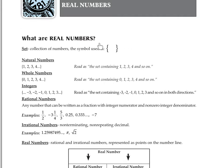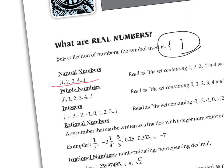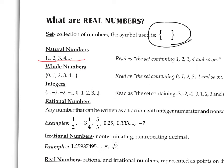We have this symbol here called braces, used to enclose any set of numbers. Here we have the set of natural numbers enclosed in braces. The natural numbers start with 1 and go on infinitely in the positive direction. The whole numbers start with 0 and go on infinitely in the positive direction. The only difference between the set of natural numbers and the set of whole numbers is that the whole numbers include 0 and the natural numbers don't.